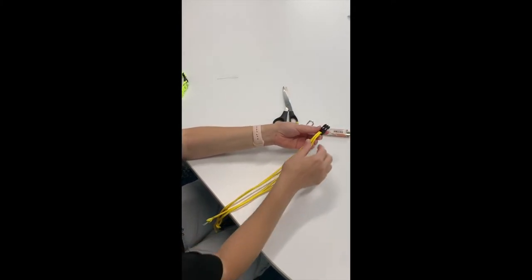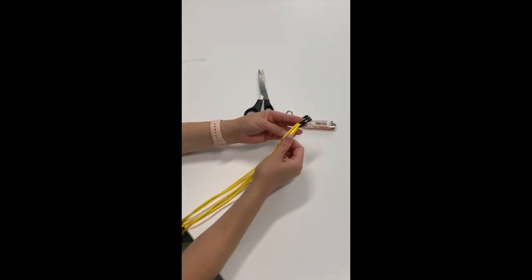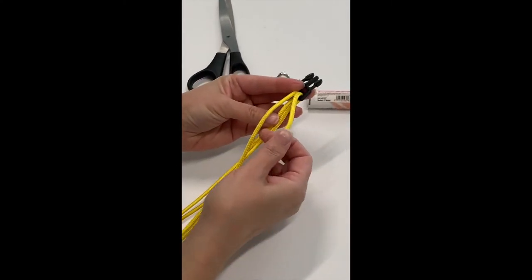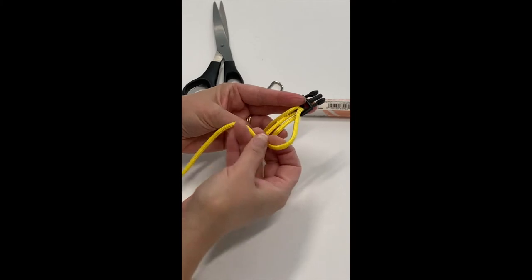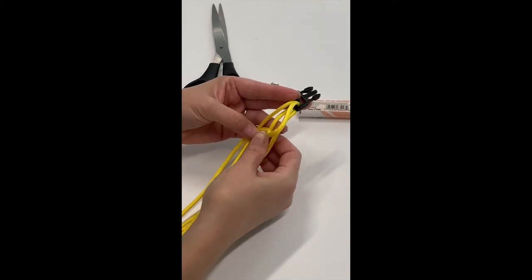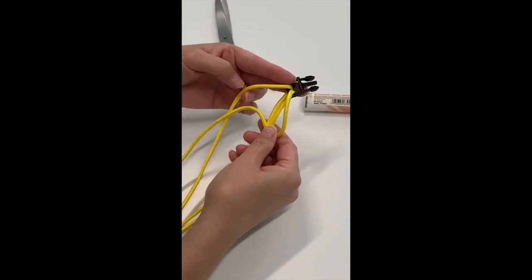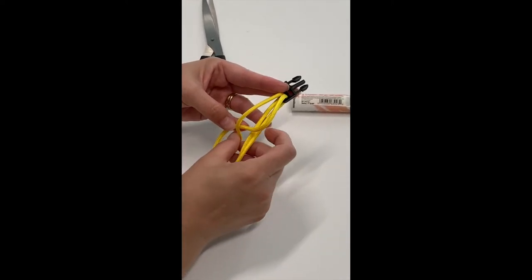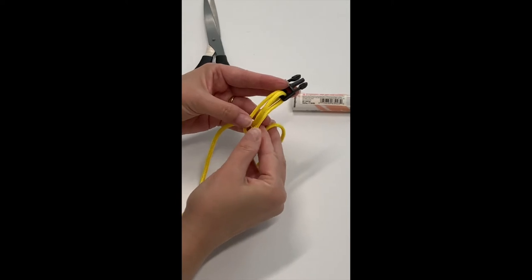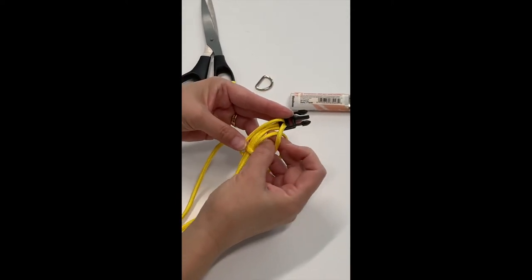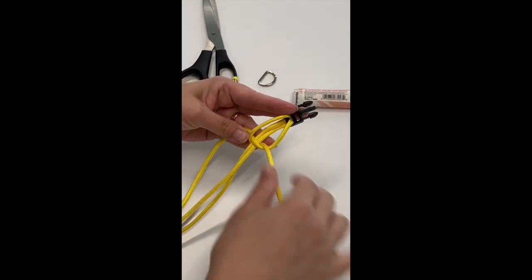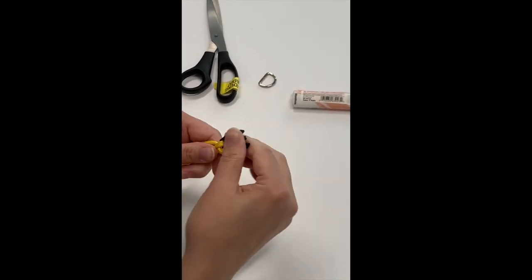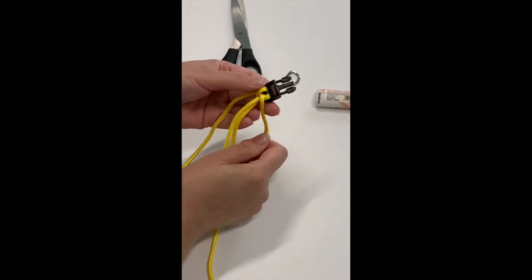To start the weave, you're going to take your right side of the paracord, make a loop over the two strands. Take your other piece of paracord and pull it through underneath. This will give you a knot. And you want to tie it pretty tightly. And that will give you your first knot.